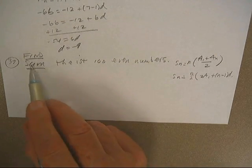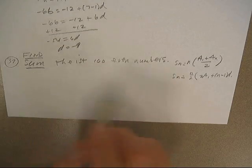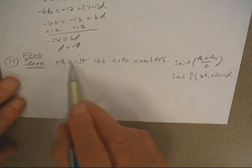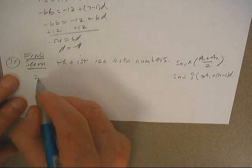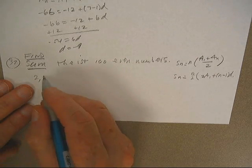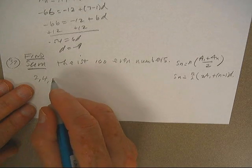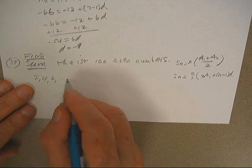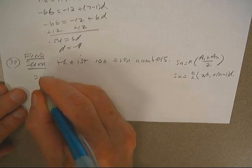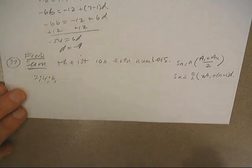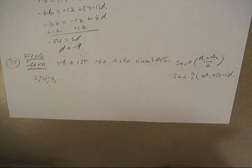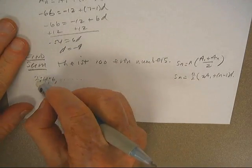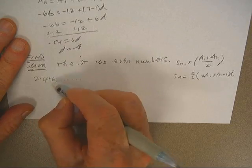There you go, we just moved over to series problems. They want me to find the sum of all the sequence terms. They tell me the first 100 even numbers. Well, I know the first one is two, the second one is four, then we've got six. I've got to find the first hundred of those and add them together, so I don't need the commas, I need the plus signs.